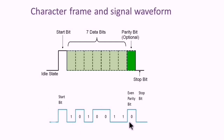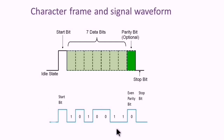If odd parity is selected, it will make the bit one to set an odd number of ones in the frame. The receiver counts the number of ones, and if it is not correct based on the selected parity, it will set an error flag.